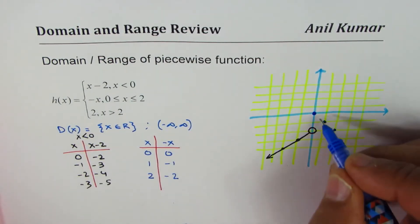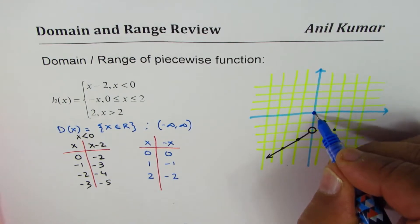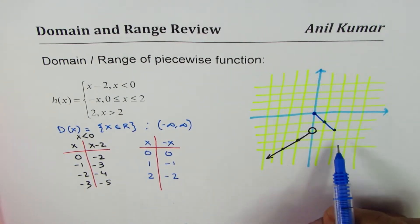Again it's a straight line so I could just connect them with a straight line, but this time the line will extend from x equals 0 to x equals 2.